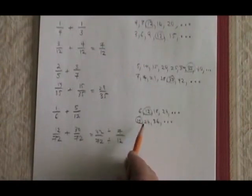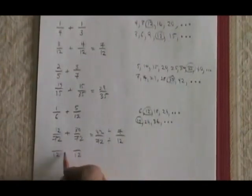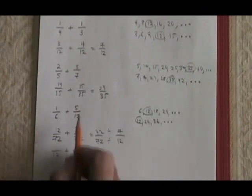If I realize that 12 is a lower denominator than 72, I can convert both fractions into fractions over 12, while the second one is already 5 over 12. It doesn't even have to change.